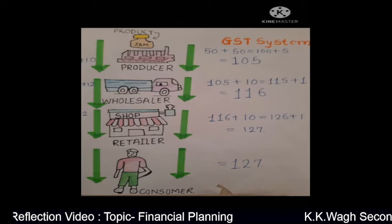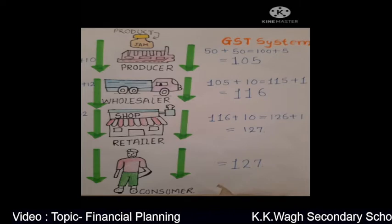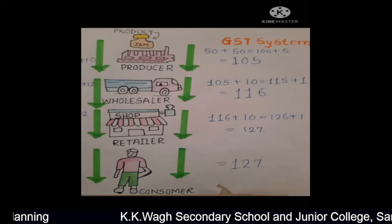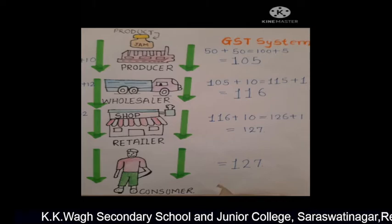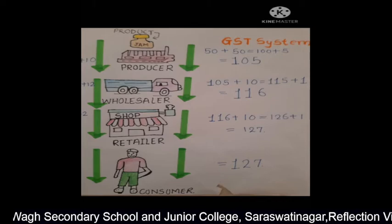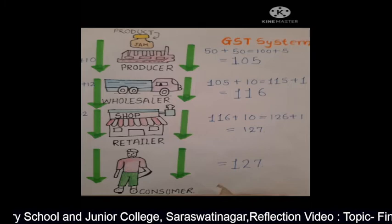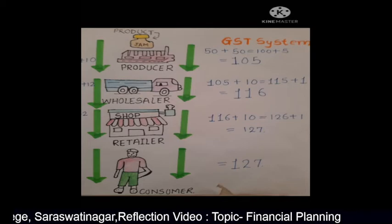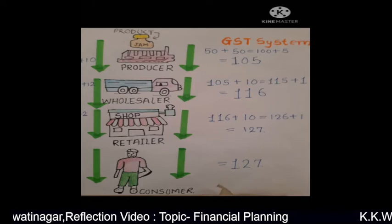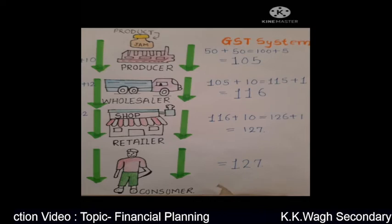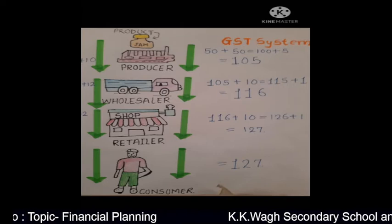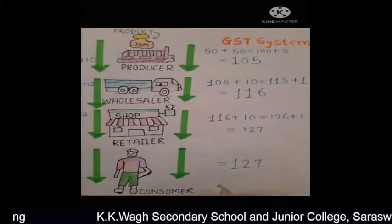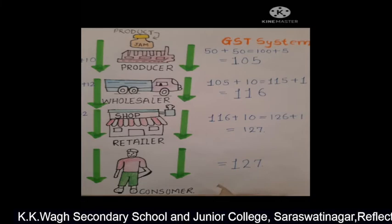Now, I will explain how the GST system is used. GST system is the new system. If the product has been taken at 50 rupees, then the profit will be added — 50% equals 100. 100 plus 5% GST equals 105 rupees. The producer will sell the product at the rate of 105 rupees. Now, the wholesaler will add 1% of tax on the product, which equals 116.